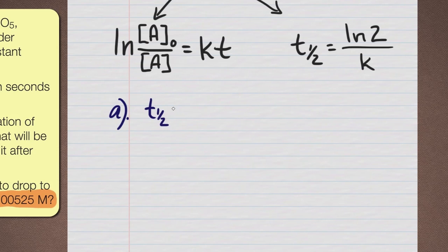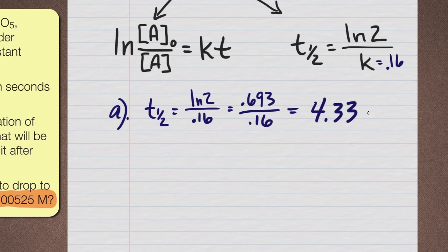And the half-life is simply going to be the natural log of 2 over K. Remember K is equal to 0.16 for the entire problem. So I'll just put 0.16 here. If you punch in the natural log of 2 in your calculator, you'll get 0.693. You'll also get some more digits which you can leave. Divide by 0.16 and you will get 4.33 seconds. And that is the answer to the very first part. So that was pretty simple.